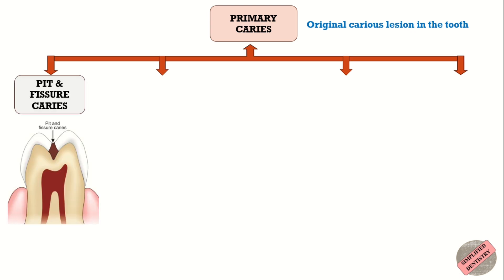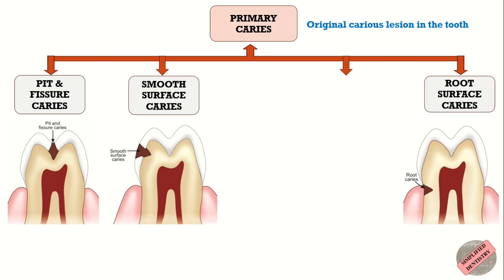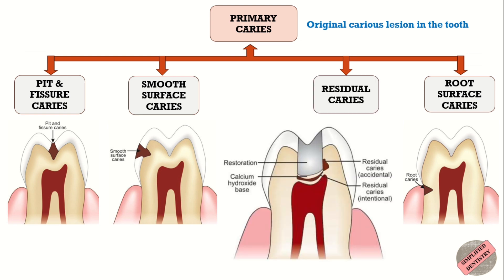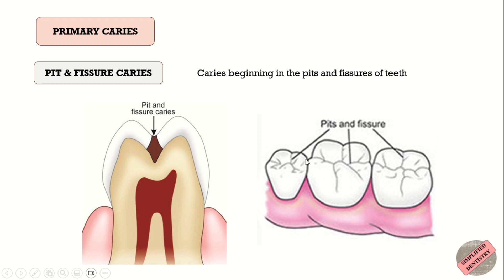These four types are: first, pit and fissure caries; second, smooth surface caries; third, root surface caries; and fourth, residual caries. Pit and fissure caries begins in the pits and fissures of teeth. Pits and fissures are areas where there is imperfect fusion of developmental enamel lobes, and because of the incomplete fusion of enamel, these areas are susceptible to food impaction and hence caries occurs.